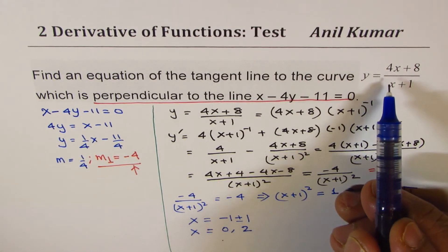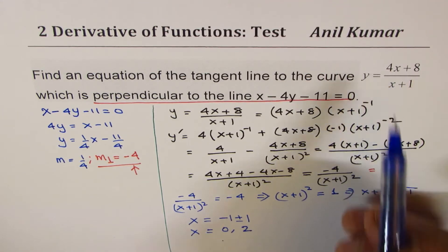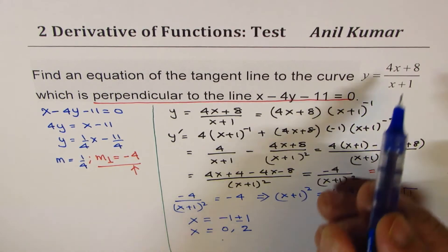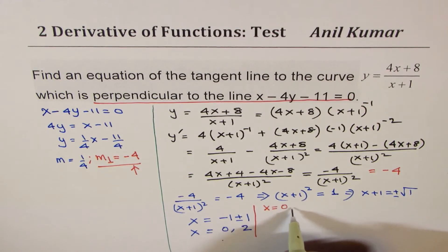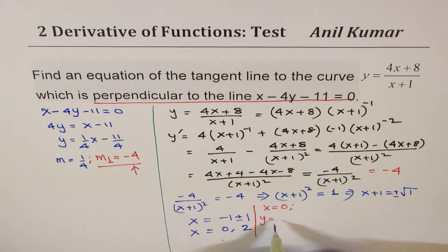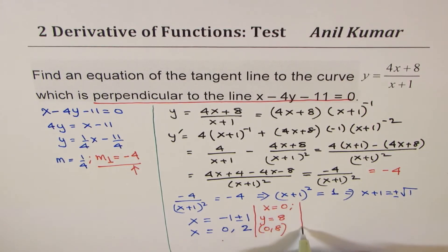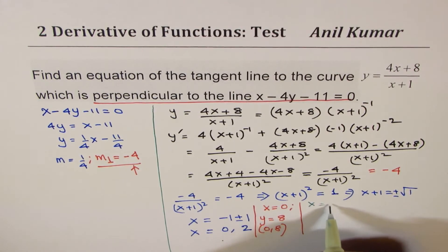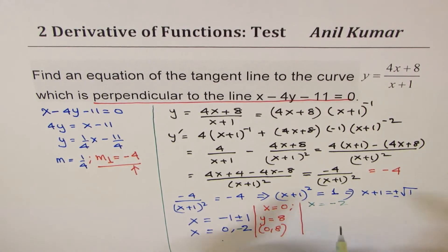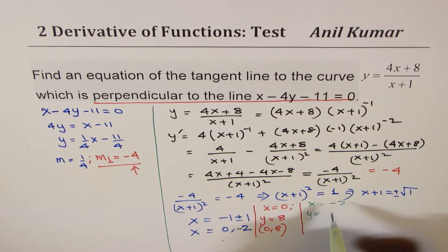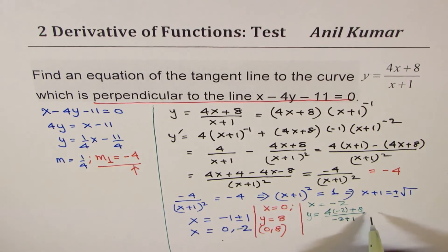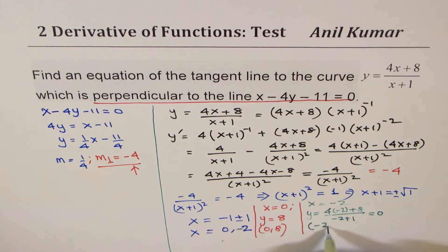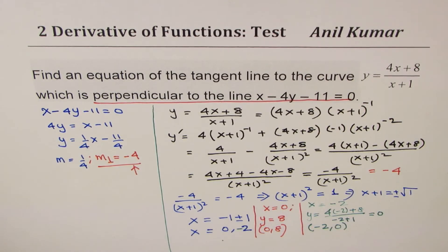We substitute these two values of x into the curve equation to find the corresponding y-values. For x equals 0, substituting into y equals (4x plus 8) over (x plus 1), we get y equals 8. So one point is (0, 8). For x equals minus 2, we get y equals (4 times minus 2 plus 8) over (minus 2 plus 1), which equals 0 over minus 1, giving y equals 0. So the second point is (minus 2, 0). These are the two points on the curve.